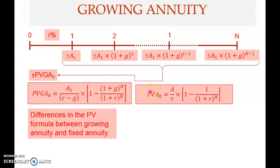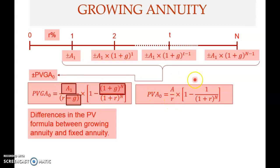There are three differences between the PVGA formula and the ordinary annuity PV formula. First, PVGA has (1+G)^N in the numerator; the ordinary formula does not. Second, PVGA has (R − G) in the denominator instead of just R. Third, PVGA uses A1 (the first payment) rather than A, because in a growing annuity each payment is different — A1, A2, A3 — so we always use A1, the payment at the end of the first period, not A0.